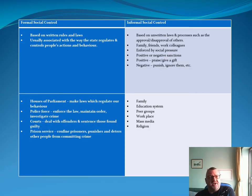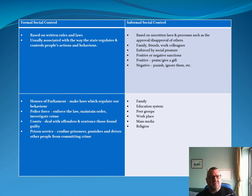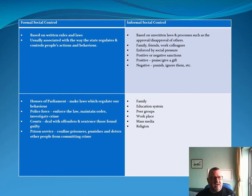Here you see a little chart that basically sums up the difference between formal and informal social control. Formal social control is based on rules and laws, whereas informal is based on unwritten laws. You can look at that at your leisure.